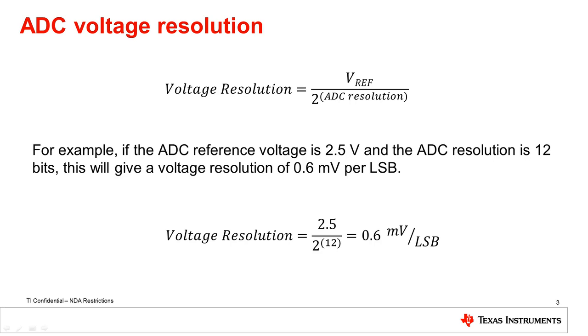For example, if the ADC reference voltage is 2.5 volts and the ADC resolution is 12 bits, this will give a voltage resolution of 0.6 millivolts per LSB.